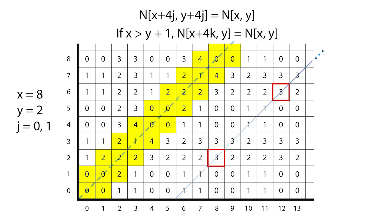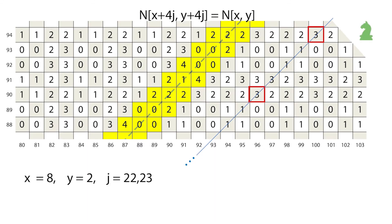These red boxes show its application when x equals eight, y equals two, and j is zero or one. Here's the same sequence when j equals twenty-two, and twenty-three.